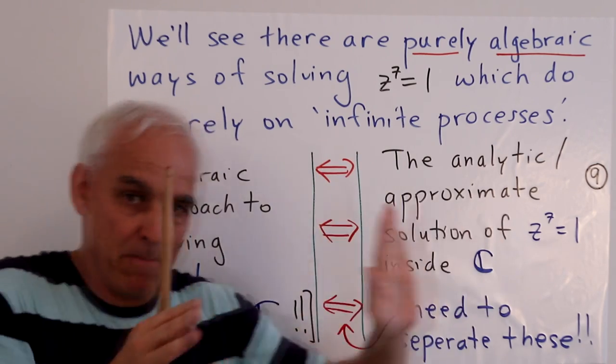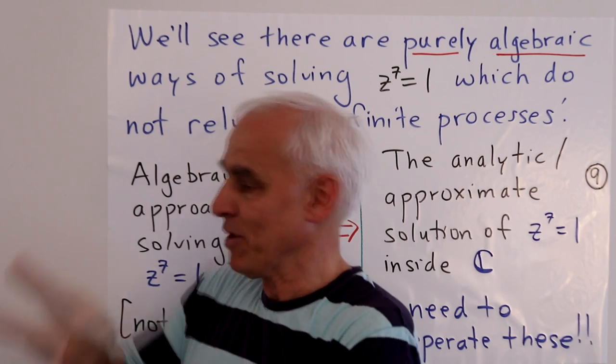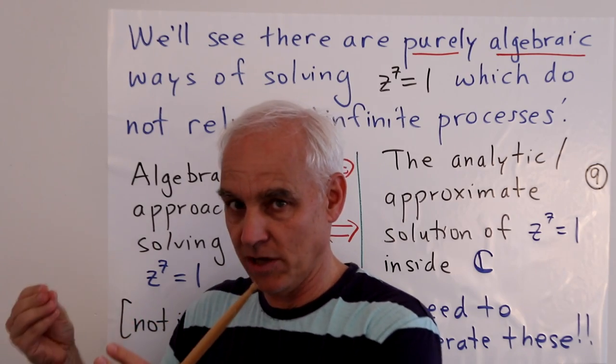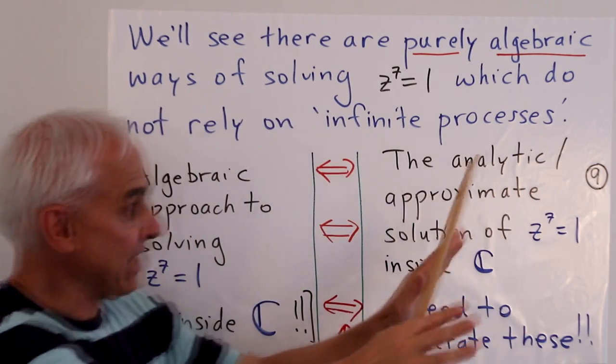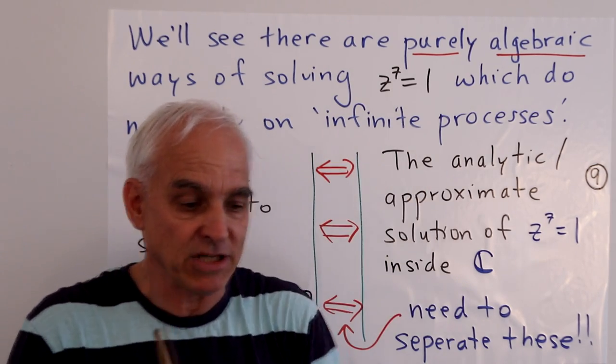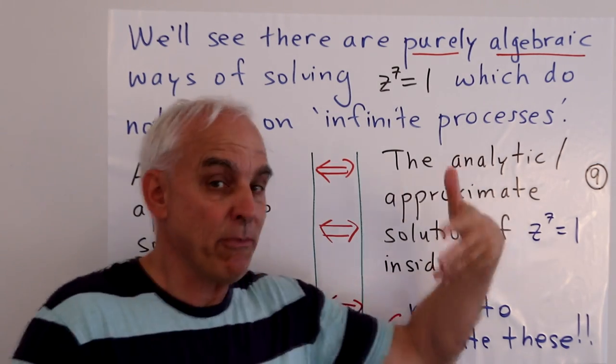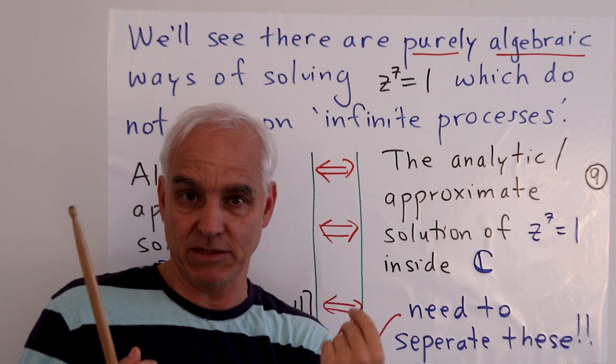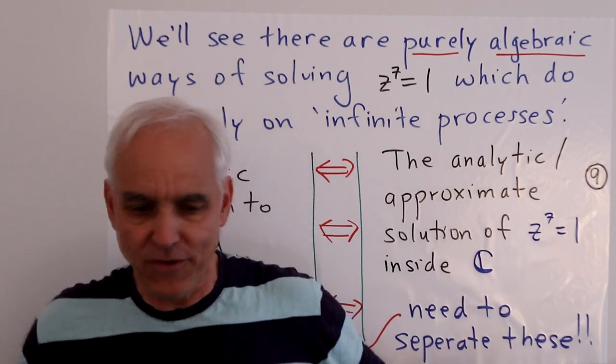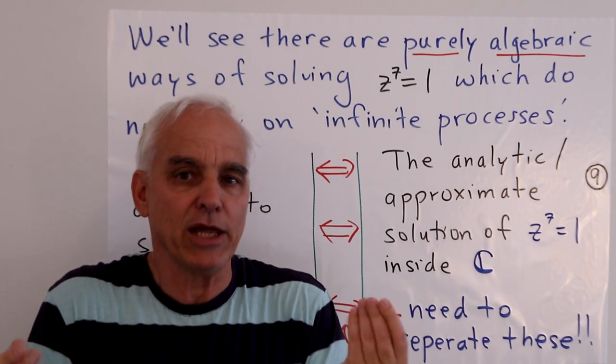Over here is the algebraic approach. Purely finite, purely algebraic, completely solid. Over here is the analytic approach where we're working within the complex numbers. But everything or most everything is approximate. We have some nice geometry, but the geometry is only approximate. And these two pictures are really different kinds of pictures. There's some kind of connection between them, and it's interesting to explore what the connection is, but they're logically separate.